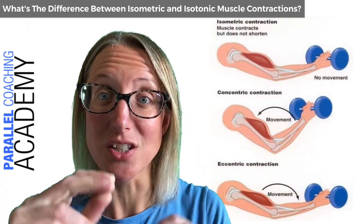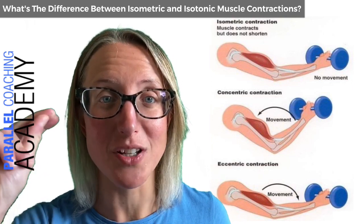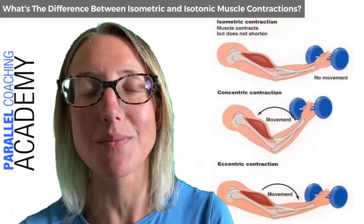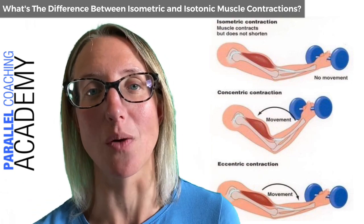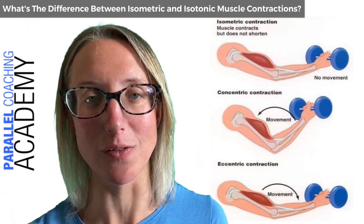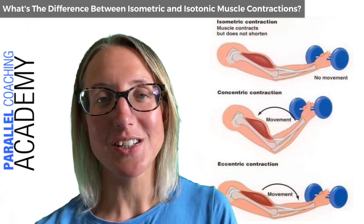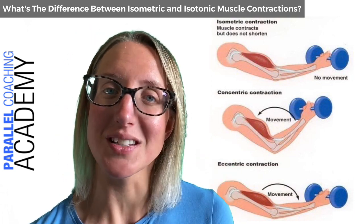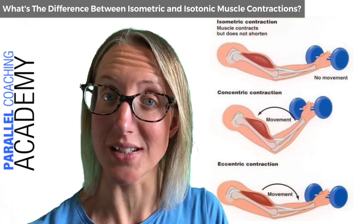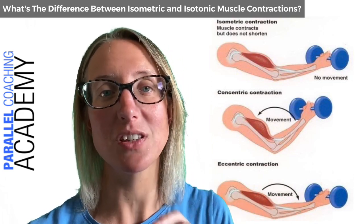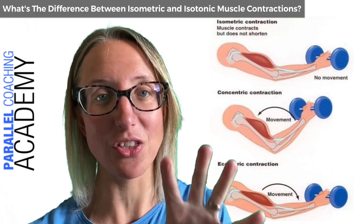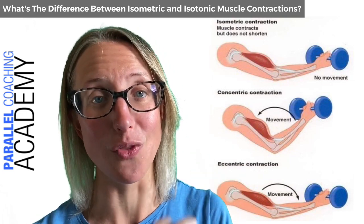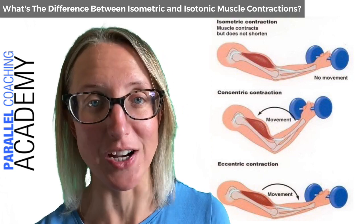This movement basically creates tension in the muscle. The muscle is on and contracted — that's the key point. When we look at the different types of contractions, they are all contracted — that's the same — but the primary difference is about the lengthening, shortening, and overall length of the muscle during that contraction.